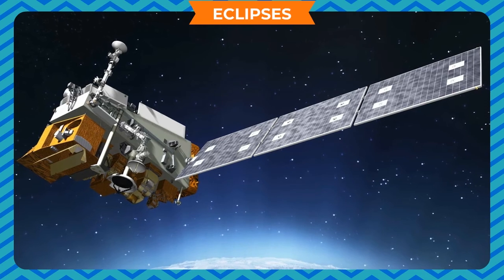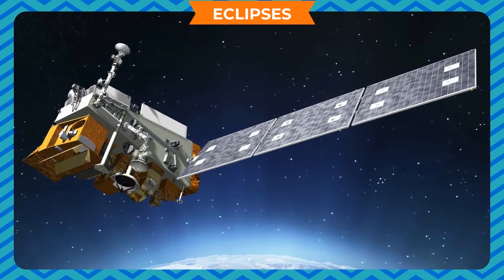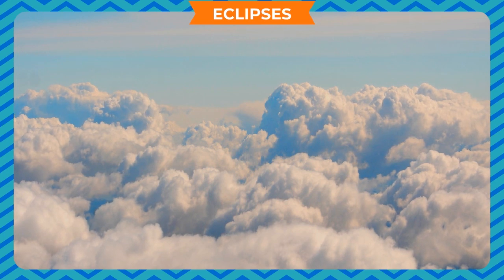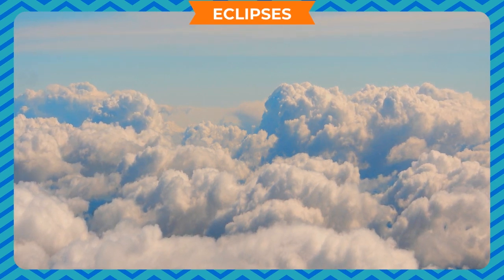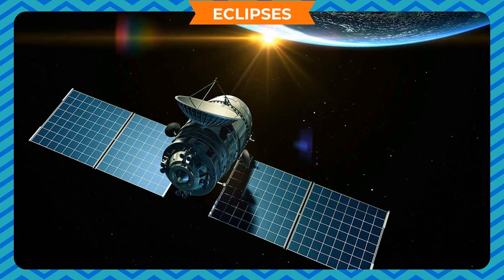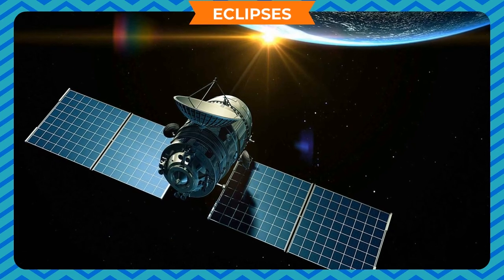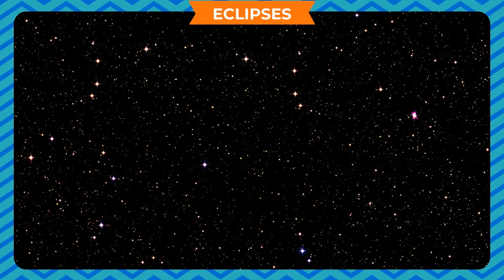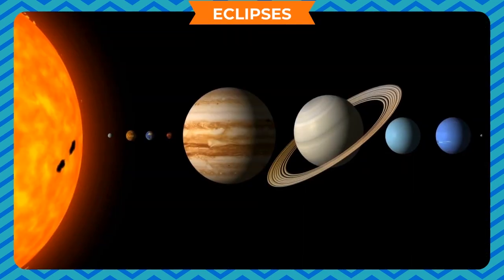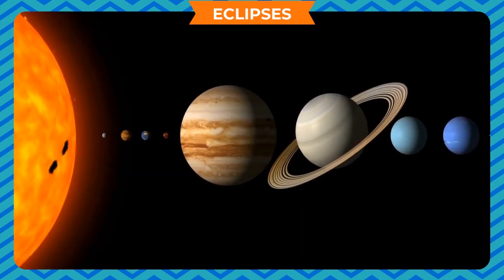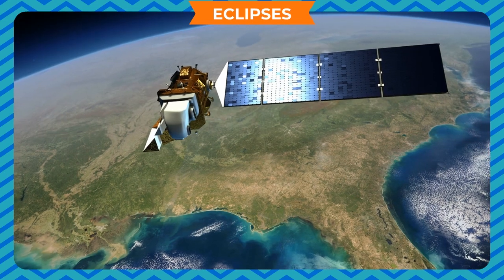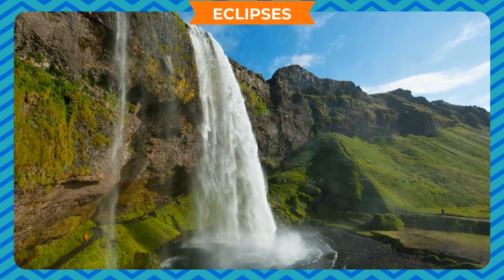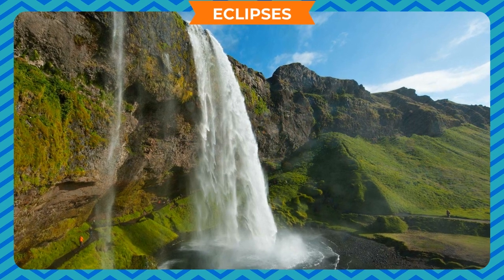Weather satellites are used for forecasting weather conditions. They shoot pictures of the movement of clouds, which are very important for weather forecasting. Some satellites are used by astronomers for taking crucial information about stars, galaxies, and the solar system. Some satellites, such as Landsat, provide valuable information about the natural resources available on the earth.